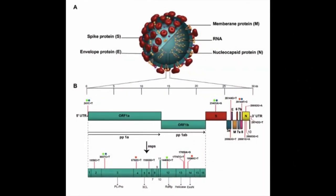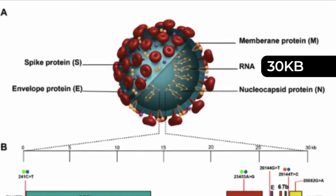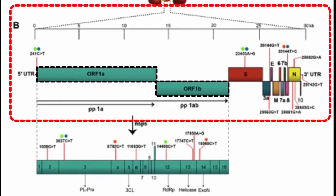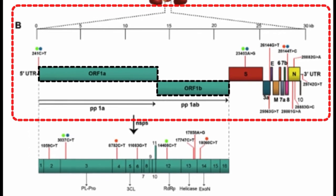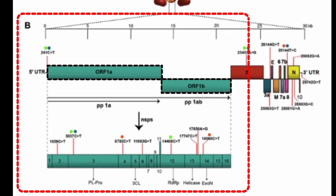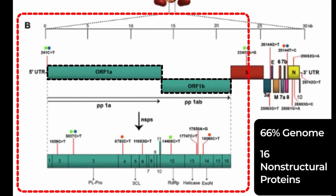The SARS-CoV-2 virus is a single-stranded RNA virus. The genome is around 30 kb in size and shares about 82% sequence identity with SARS-CoV and MERS-CoV. Most of the genome includes open reading frames, or ORFs, that encode two types of proteins: structural proteins and non-structural proteins. The first ORF encompasses approximately 66% of the whole genome and encodes 16 non-structural proteins, which are mainly involved in the replication of the virus.